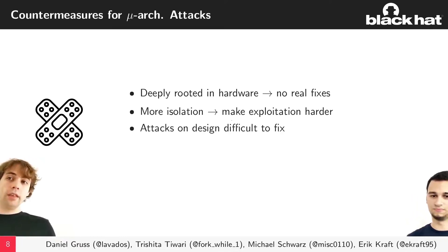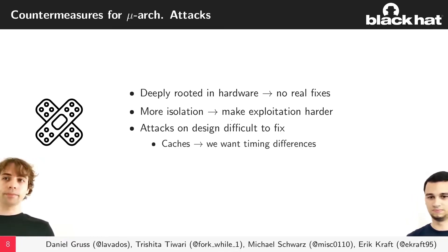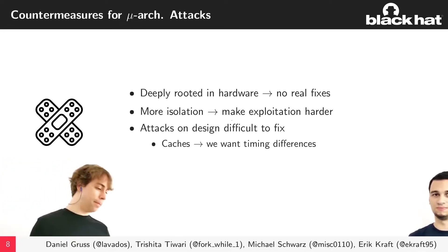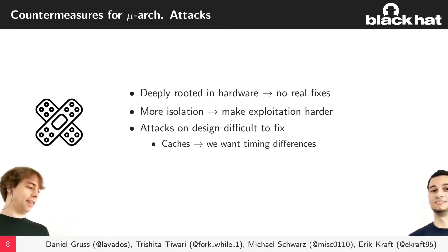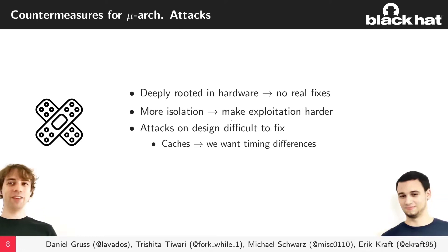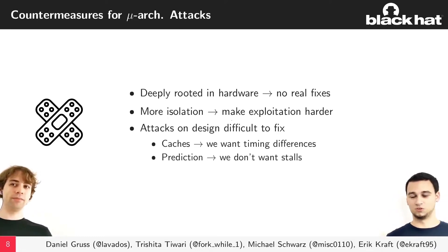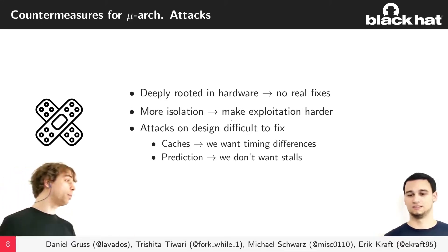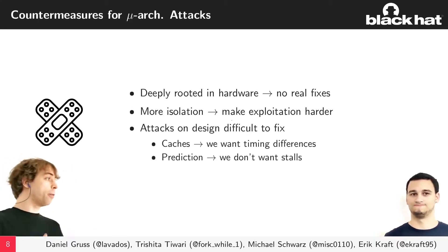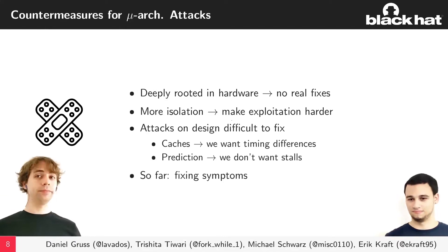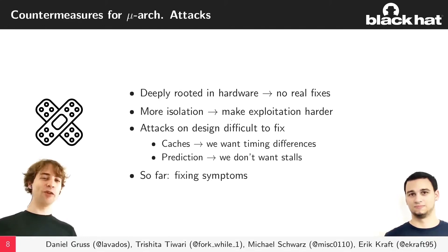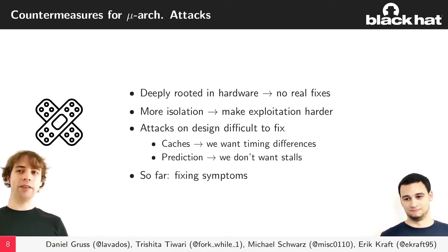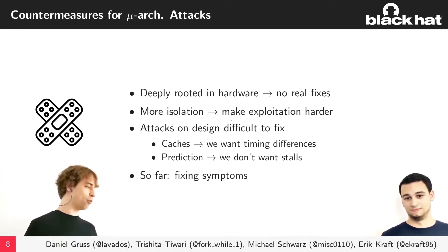It's very difficult to fix these issues. For caches, we don't want to remove caches because we want the performance. For Spectre, it would mean giving up branch predictions. So we are only fixing symptoms, not the root cause. Hopefully in a few years we will know how to fix these problems more fundamentally — it sounds like we would need a new hardware design.